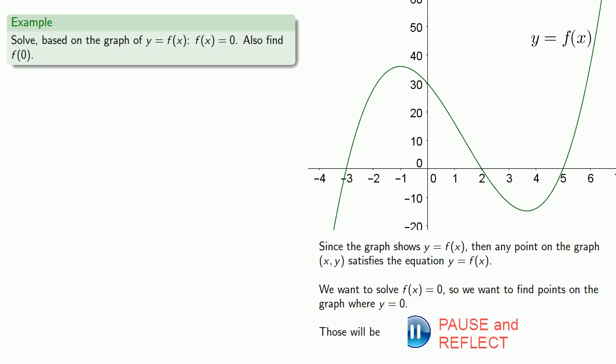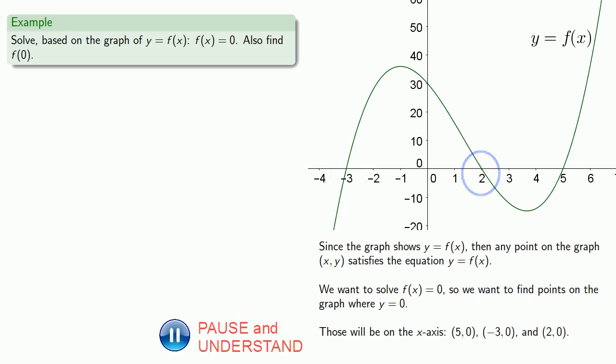Those points will be on the x-axis: (5, 0), (-3, 0), and (2, 0). Now, this time, because we're actually trying to solve an equation in x, we only need to give the x values. So the solutions will be -3, 2, and 5.